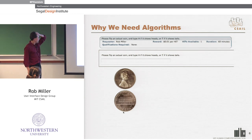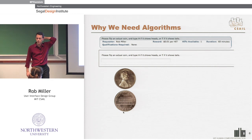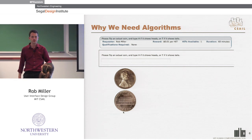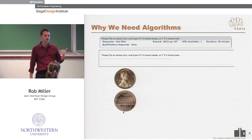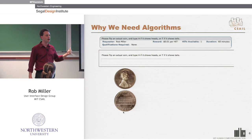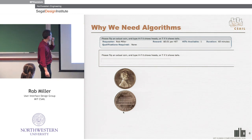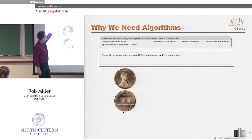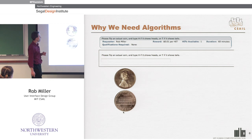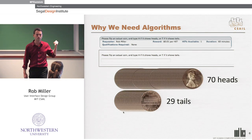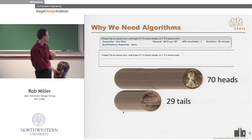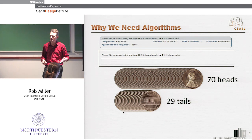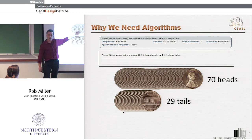I want to start by demonstrating one of the first problems you run into when doing crowd computing. Mechanical Turk has this problem in spades — you encounter it immediately. I offer people one cent to take a coin out of their pocket, flip it, and tell me whether it's heads or tails by typing H or T. Very reliably, from a run of a hundred people, the results are skewed — there are lots of unfair coins out there, or not a lot of actual coin flipping going on.